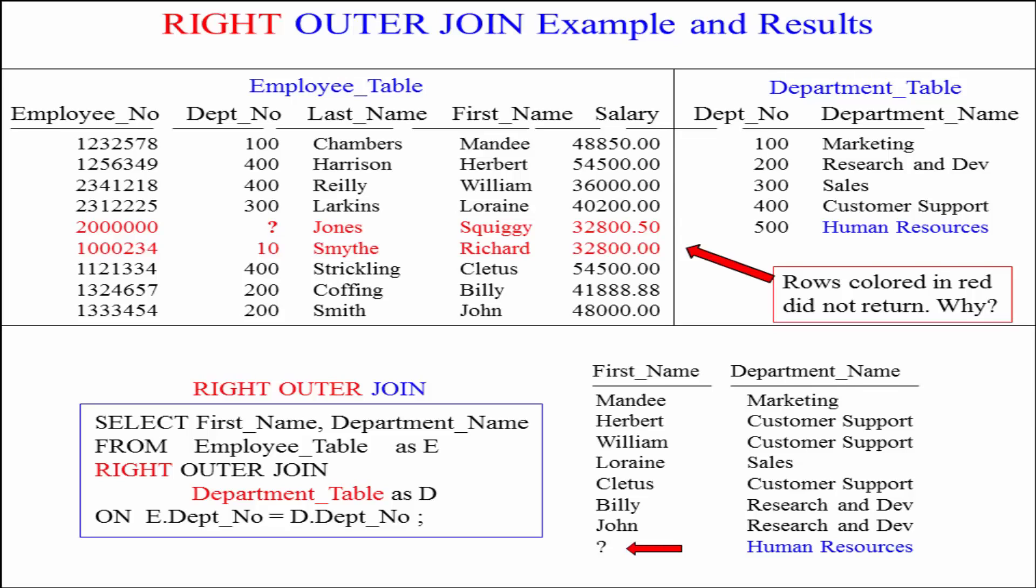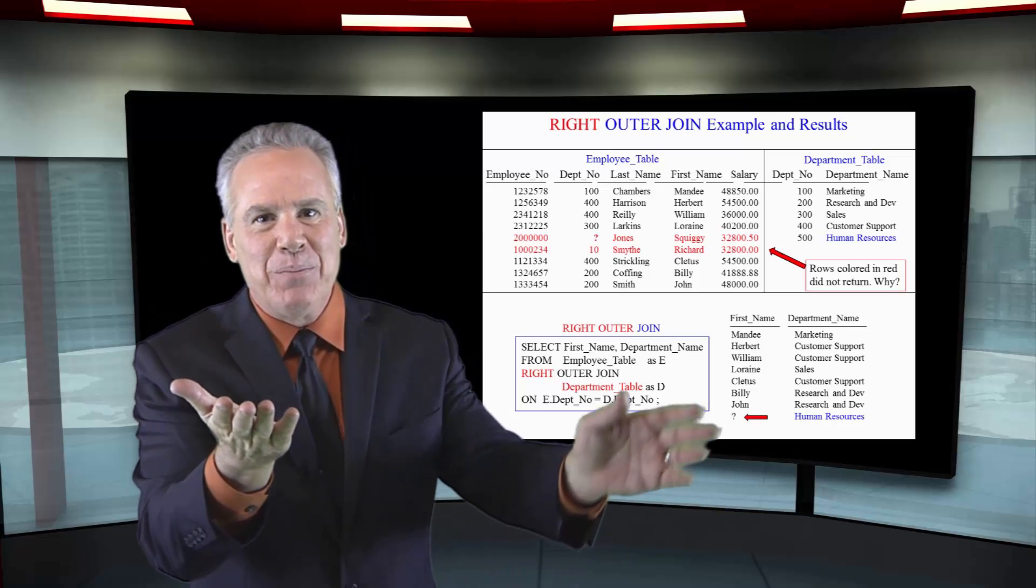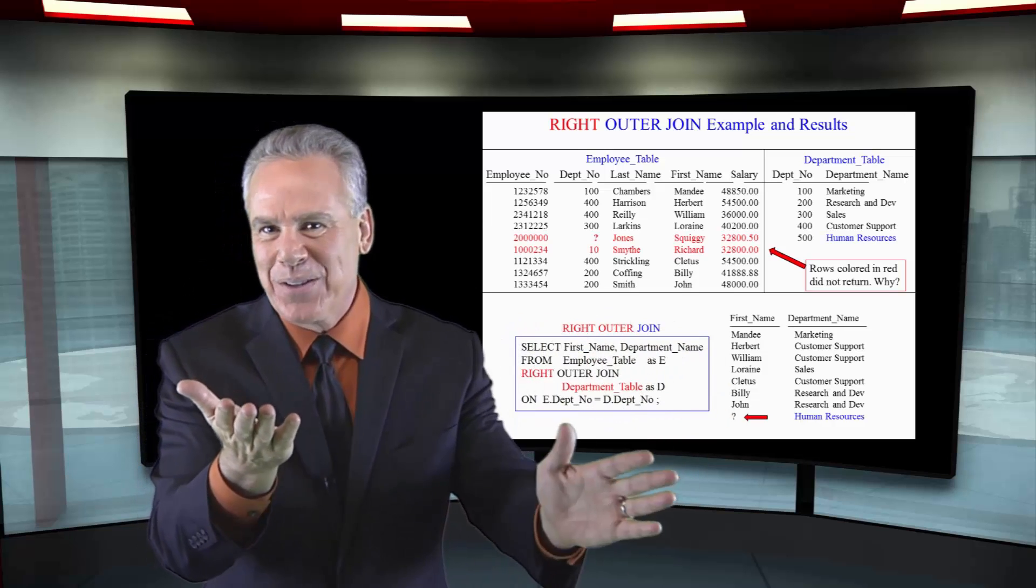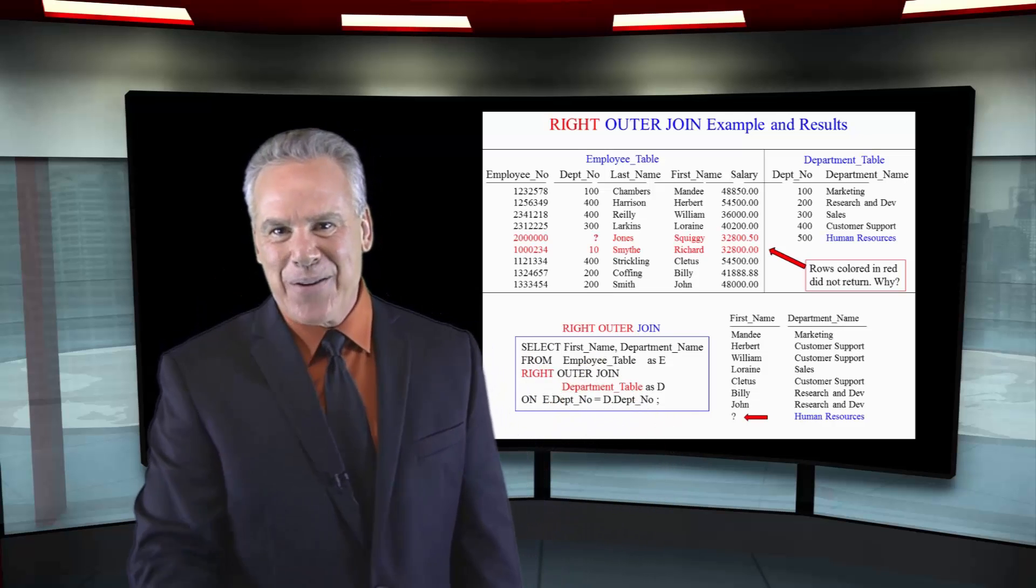Then there's a problem - there was one row in the department table that didn't have a match: department 500 Human Resources. The system says okay, just give me the department name. We've asked for that in the SELECT list from the department table, and we're going to get the department name. It's going to put a NULL in the first name because it couldn't fulfill that. That's a right outer join.